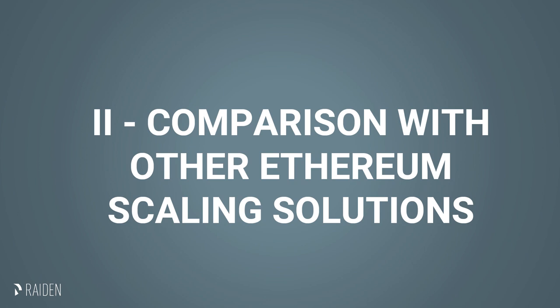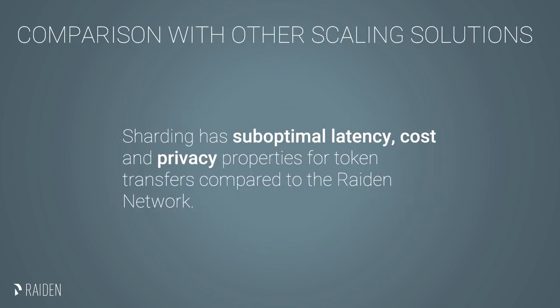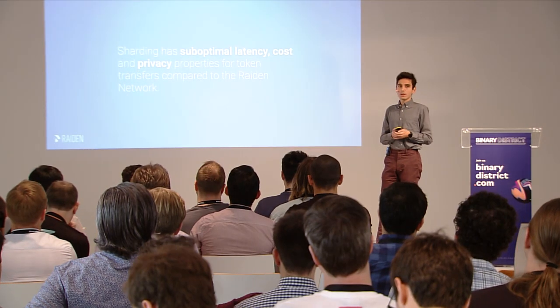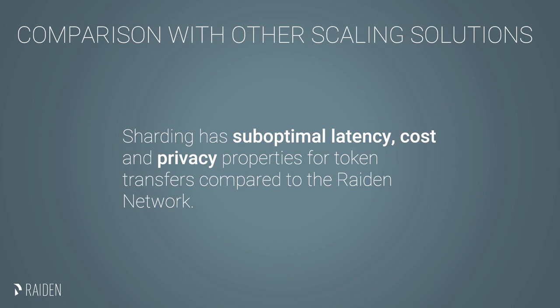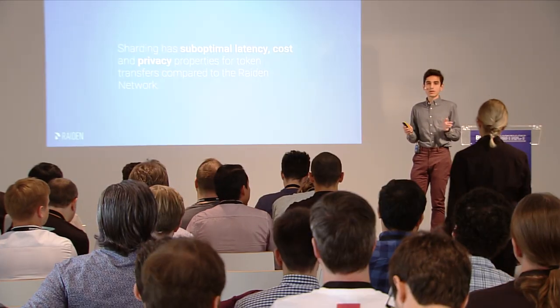I would like to speak a little bit about comparison with some other Ethereum scaling solutions, as seen from the token transfer perspective. Sharding is something that is going to be really useful in the Ethereum blockchain, essentially partitioning the state across multiple sidechains. But as far as token transfers are concerned, sharding will probably have suboptimal latency, cost, and privacy properties, because to scale token transaction capacity we would need cross-shard communication, and that would probably end up being slower and as expensive as transfers in the Ethereum network.